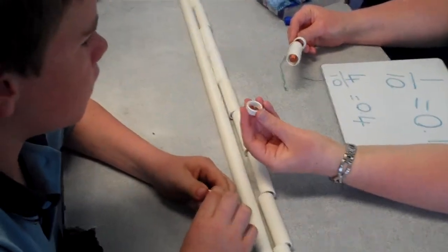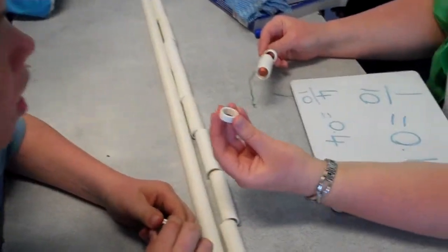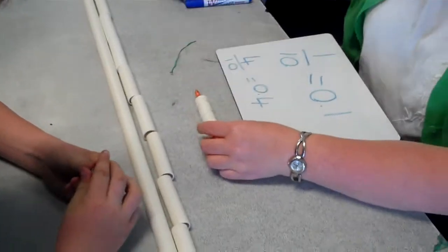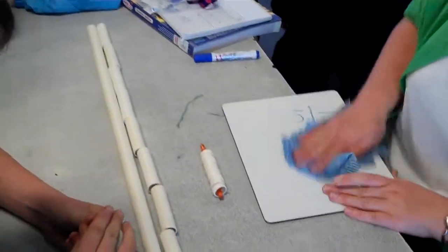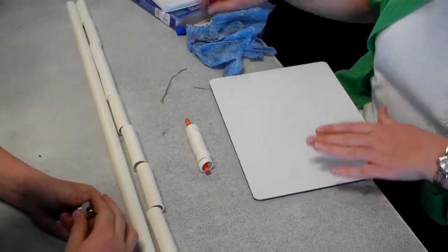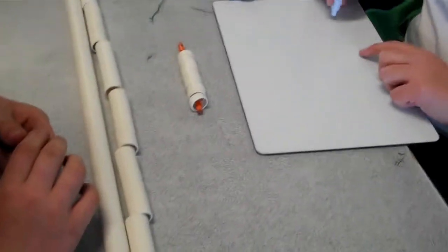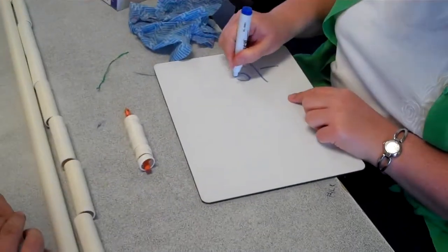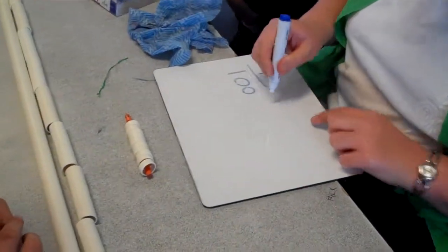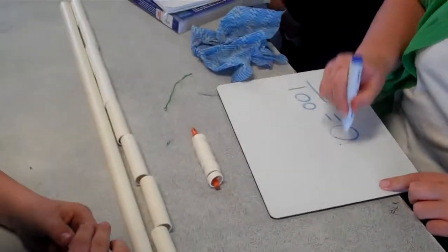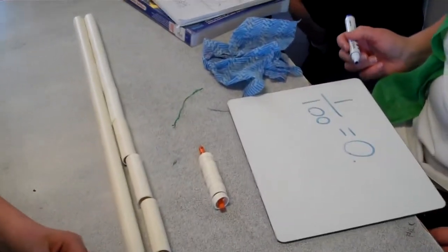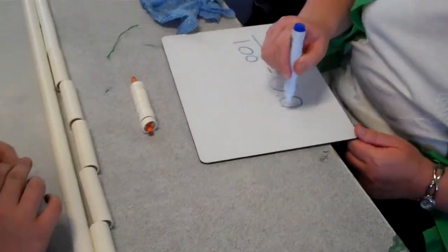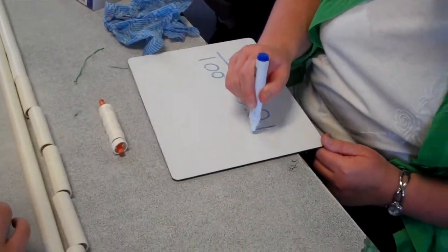So how much is this little piece worth? One one-hundredth. The little ones are one one-hundredth. How do I write that as a decimal? Zero point zero one — 0.01. Beautiful.